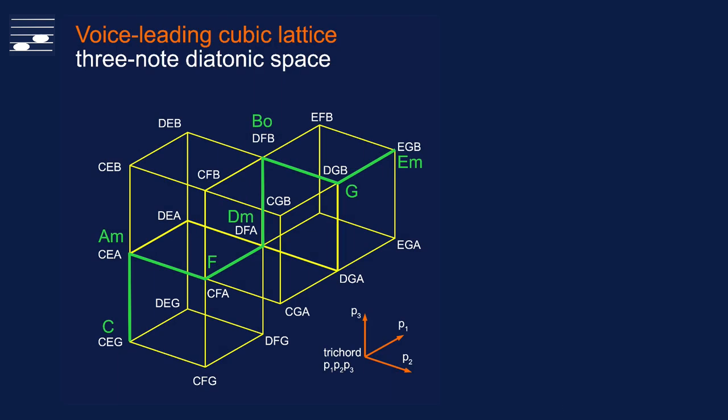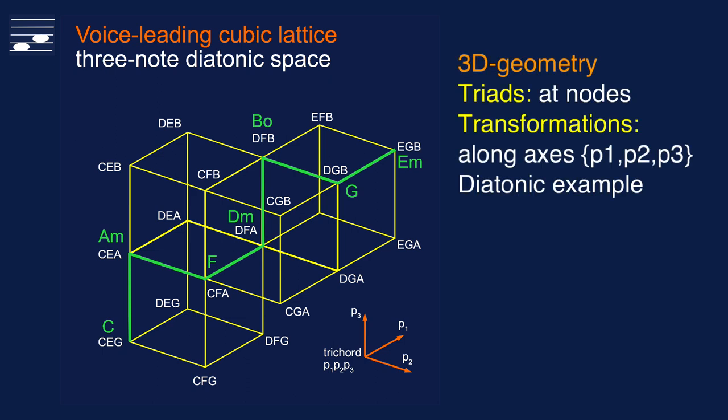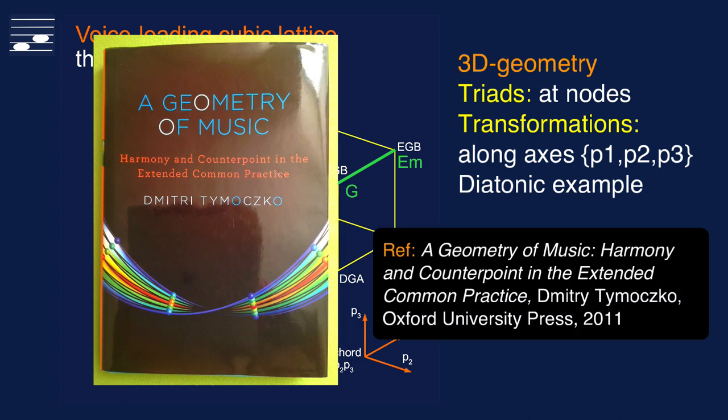Here you see the voice-leading cubic lattice that, instead of nodes, has complete triads at the nodes. Now, transformations correspond to movement along axes in this 3D geometry. Basic transformations are along a single axis. Compound transformations involve diagonal motion, as shown here for the diatonic seven-pitch scale example in C major. You'll find the detailed description of this approach in the Timozco book that I've mentioned before.